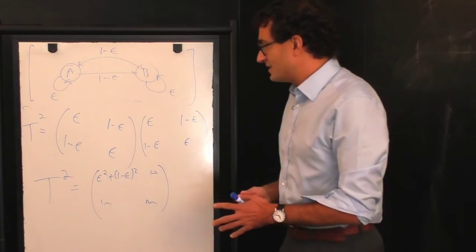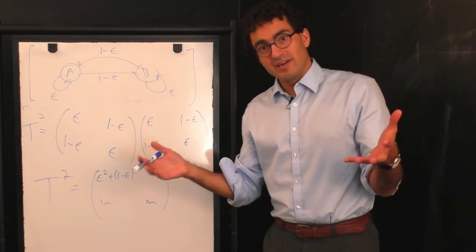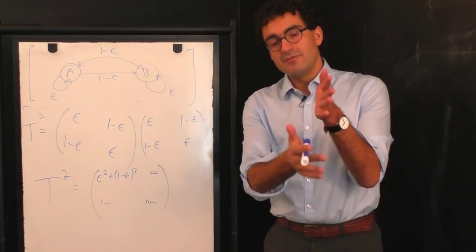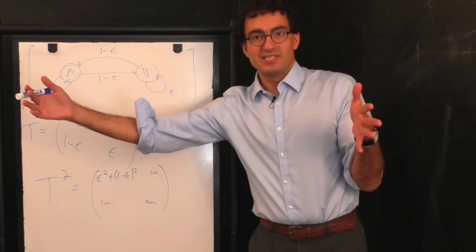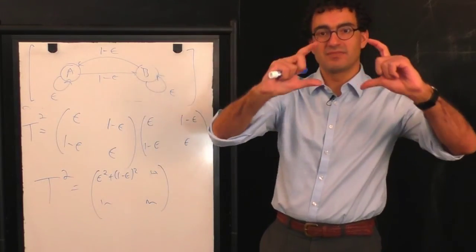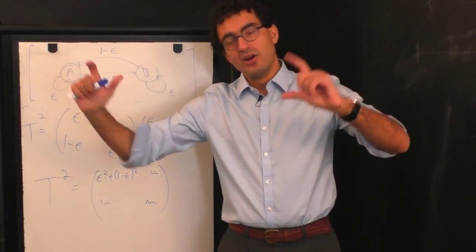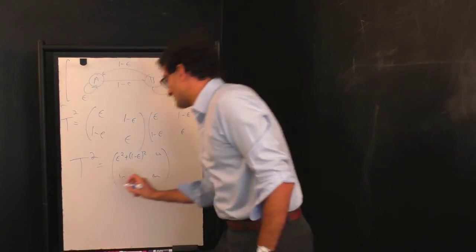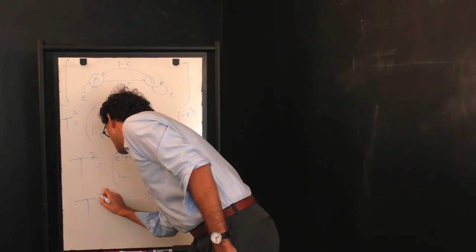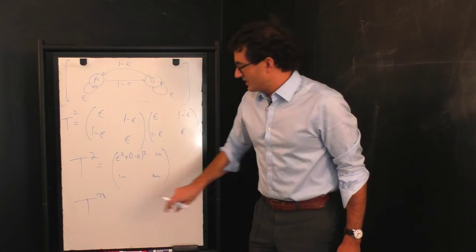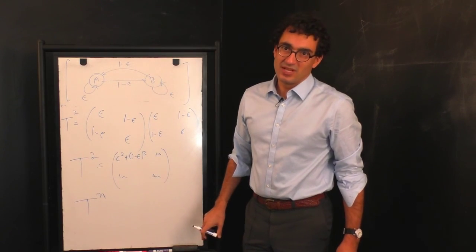Now we can see that in some sense it's a rather trivial problem to see what happens to this matrix as you continue to coarse-grain. If you take blocks of three or four or five, all you have to do to see the resulting model is raise T to the power that you're interested in. Here, N is now just the block size.